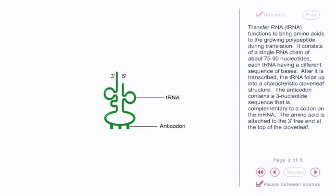The anticodon contains a three nucleotide sequence that is complementary to a codon on the mRNA. The amino acid is attached to the 3' free end at the top of the cloverleaf.